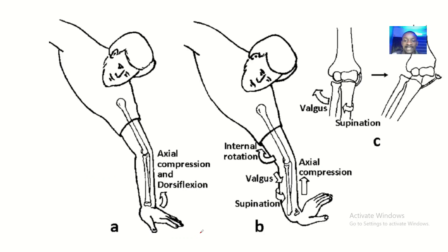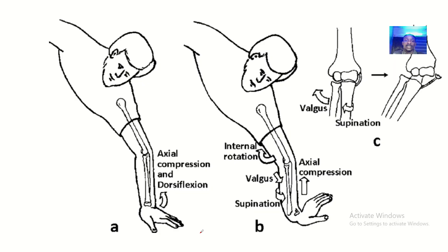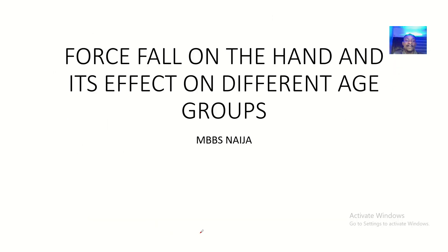That's it — the effect of falling on an outstretched hand: effects in children, effects in adults, and effects in elderly people. See you guys in the next one. Bye for now.